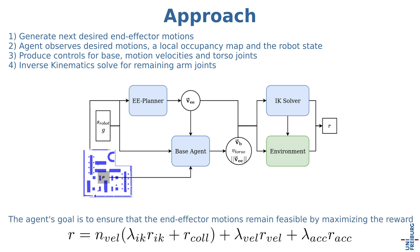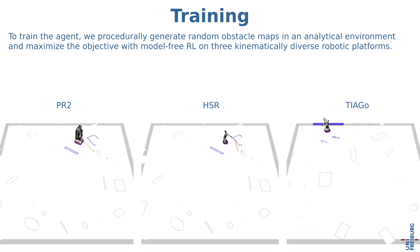The agent's goal is to ensure that the end-effector motions remain kinematically feasible by minimizing deviations and collisions and producing smooth actions.